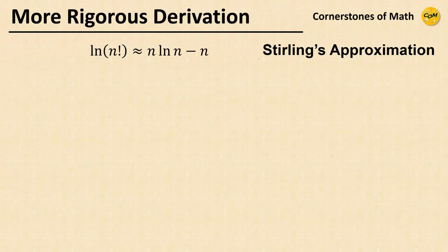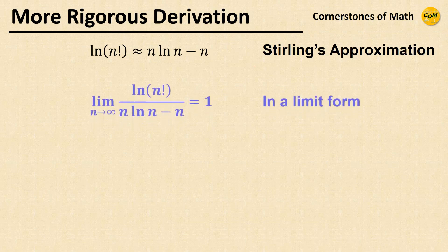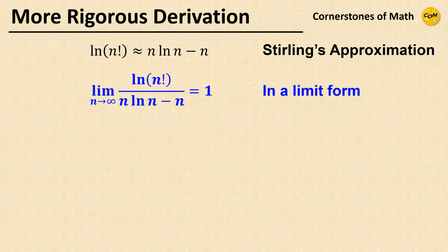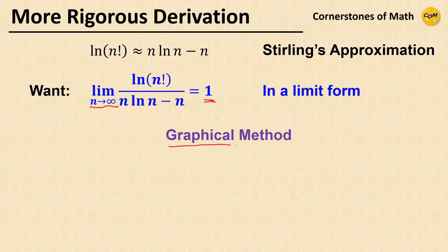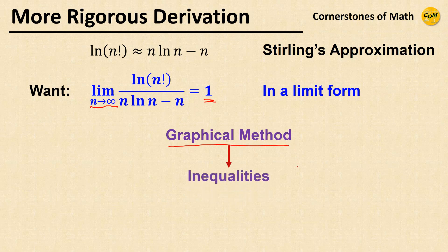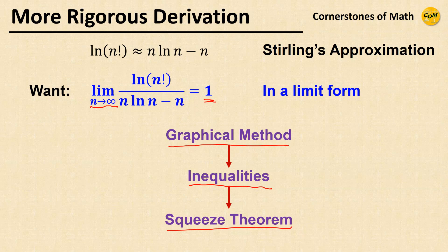Now I will show you a more rigorous derivation using the basic theory of limits. If you write Stirling's approximation in limit form, we have: the limit of ln(n!) / (n·ln(n) - n) equals 1 as n → ∞. We are going to derive this limit using a similar graphical method, but instead of using the approximately-equal-to notation, we are going to set up inequalities. With just the right inequalities, we can use the squeeze theorem to determine the value of the limit.